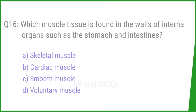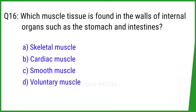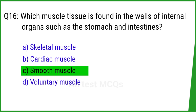Question number 16. Which muscle tissue is found in the walls of internal organs such as the stomach and intestines? The right answer is option C: Smooth muscle.